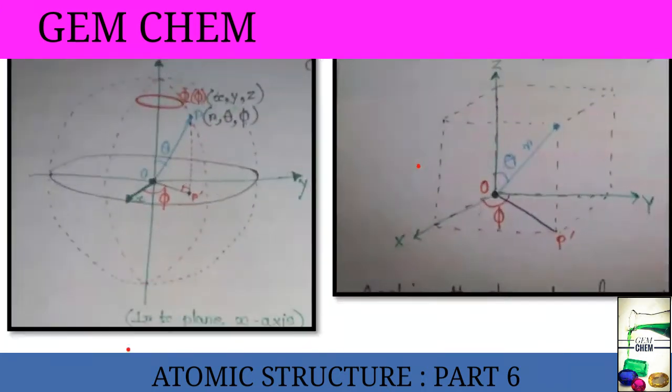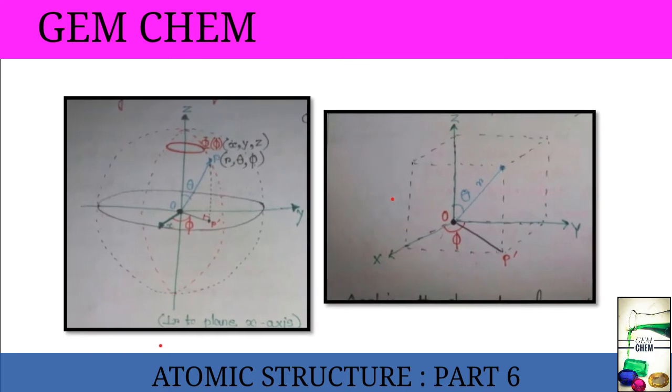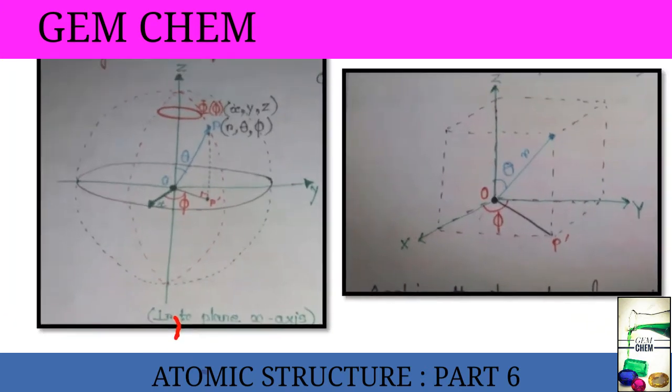First we will deal with Schrödinger equation in polar coordinates. Now see this diagram. This is our previous diagram which we have seen while dealing with the Schrödinger wave equation in previous videos. This is our x-axis, y-axis and z-axis. This is our 3D coordination in cuboid structure and this is our spherical coordinate. OP is a radius vector and OP' is a projection of OP on the xy plane. This plane is actually the xy plane.